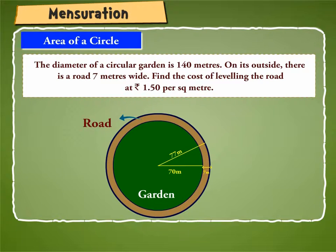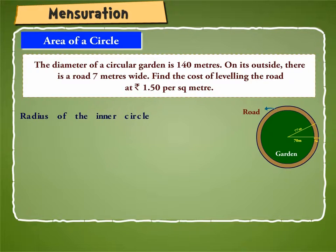Now, if we look at the figure, the inner circle represents the garden and the outer circle represents the outer boundary of the path. Radius of the inner circle is equal to 1/2 into diameter is equal to 1/2 into 140 or 70 meter.